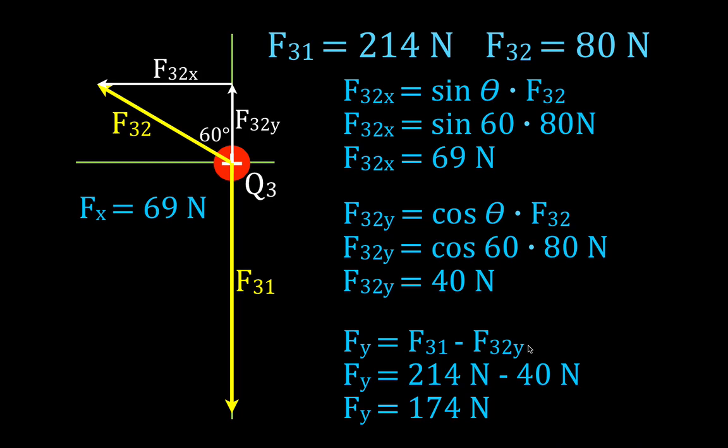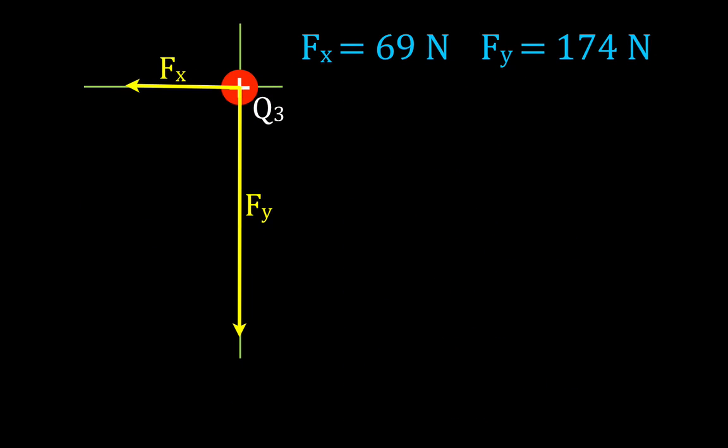So now we really have our two forces, one in the x, one in the y direction, 69 newtons and in the y direction, 174 newtons, and now we can figure out the resultant force of those two. And here we have the force in the x direction is 69. The force in the y direction is 174. I can add these two vectors up now, head to tail. I'm going to move the y one over, and the resultant force, the net force acting on Q3, is simply this, represented by this vector.